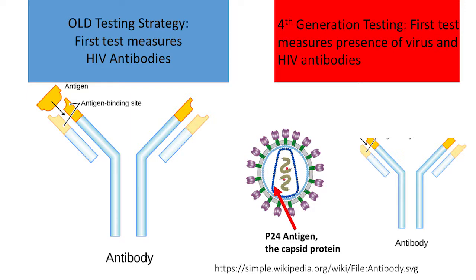The next slide shows what difference the old test and the new test have. The old test only tested antibodies — that was the very first test. Then a second antibody test followed, and finally they'd check for the virus. The new test, this fourth generation test, tests for the virus and the antibody with the very first blood draw.